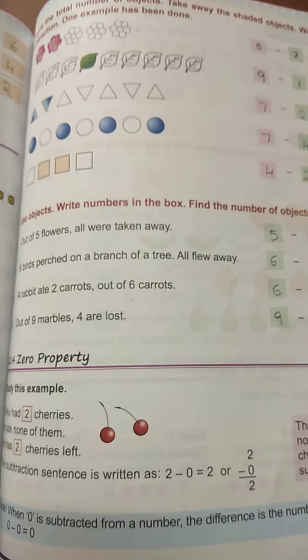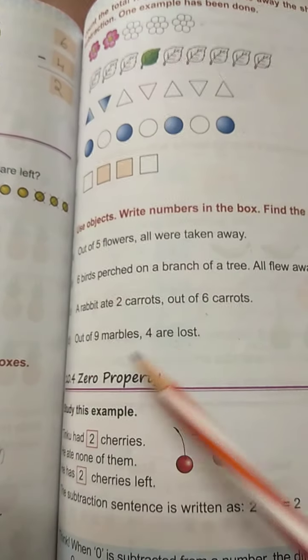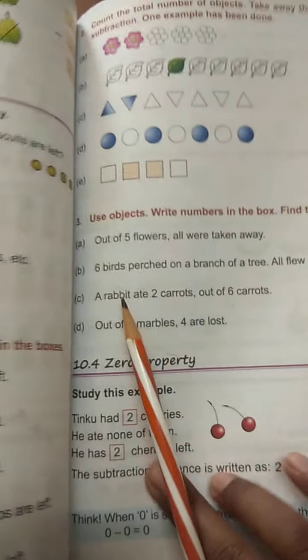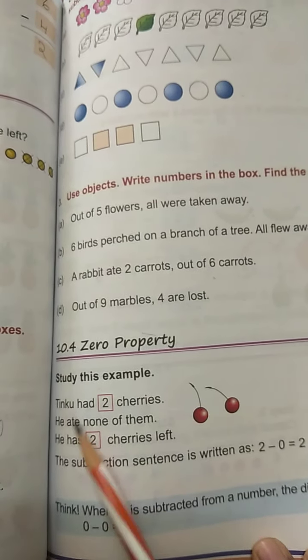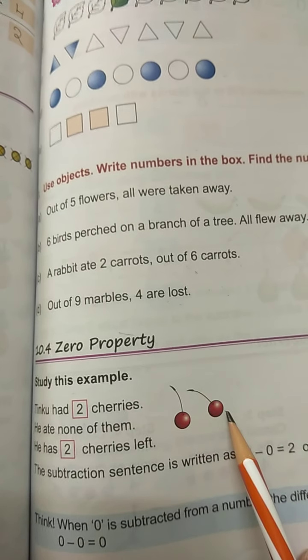Children, let's continue the same chapter, subtraction itself. Today we'll be doing about zero property. So study this example. Tinko had two cherries. Two cherries, it's Tinko.